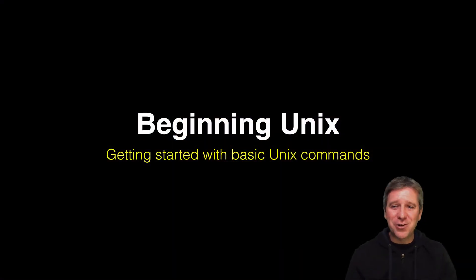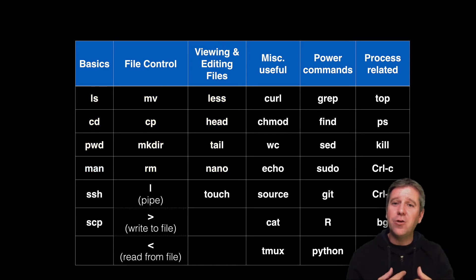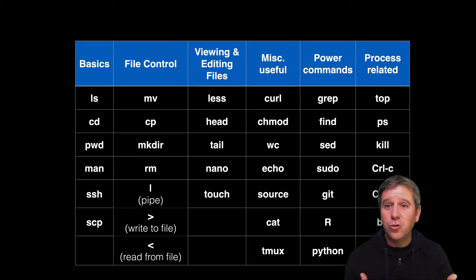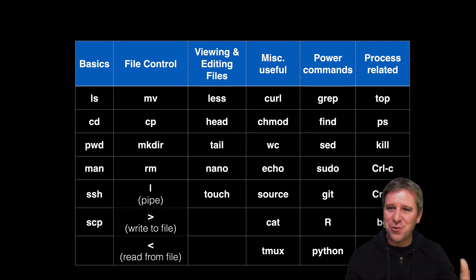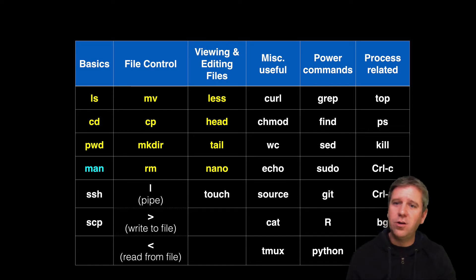In this second video of our Essential UNIX for Bioinformatics section, we're going to get started using and learning some key UNIX commands together. Our approach is to focus on the 20-odd commands from this list that will make you productive immediately — commands you'll use probably 95% of the time even way out in the future for your research work. First, we're going to focus on 12 commands dealing with file system navigation, file control, and viewing and editing text files.